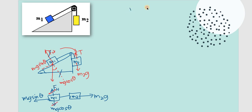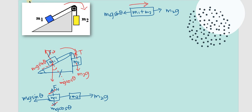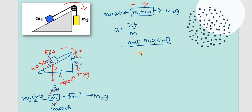Simplifying with combined mass M1 plus M2: M2 is pulled by M2G and M1 is pulled by M1G sinθ. Since M2 overpowers and the system moves toward M2: A = (M2G − M1G sinθ) / (M1 + M2). That's how you solve for acceleration on the inclined plane.